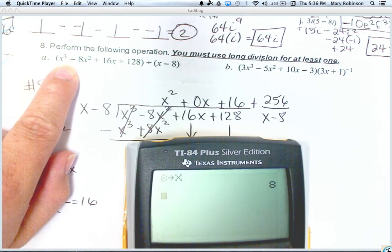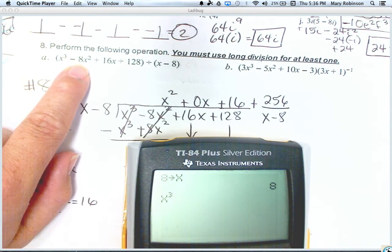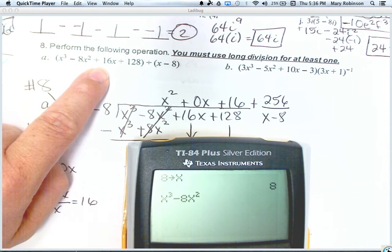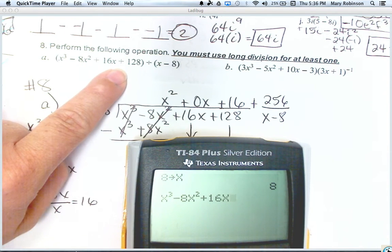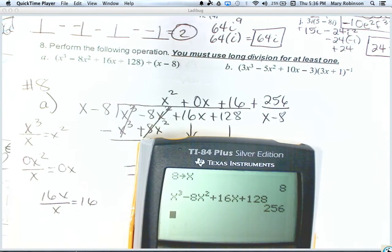So if we take 8 and store it as x and then type in our original dividend, x to the third minus 8x squared plus 16x plus 128, we should get the remainder 256. That's how you can confirm that your answer is correct.